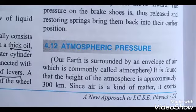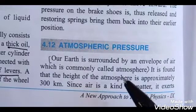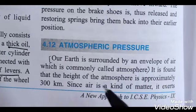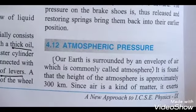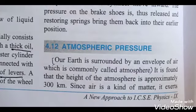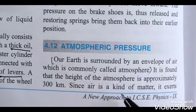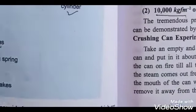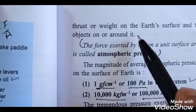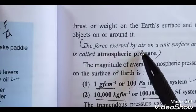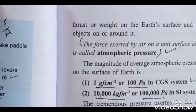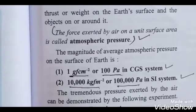Atmospheric pressure. Our Earth is surrounded by an envelope of air, which is commonly called atmosphere. The height of atmosphere is approximately 300 km. Since air is a matter, and matter exerts thrust — that is, it has weight — air applies weight on the Earth. This force exerted by air on a unit surface area is called atmospheric pressure.